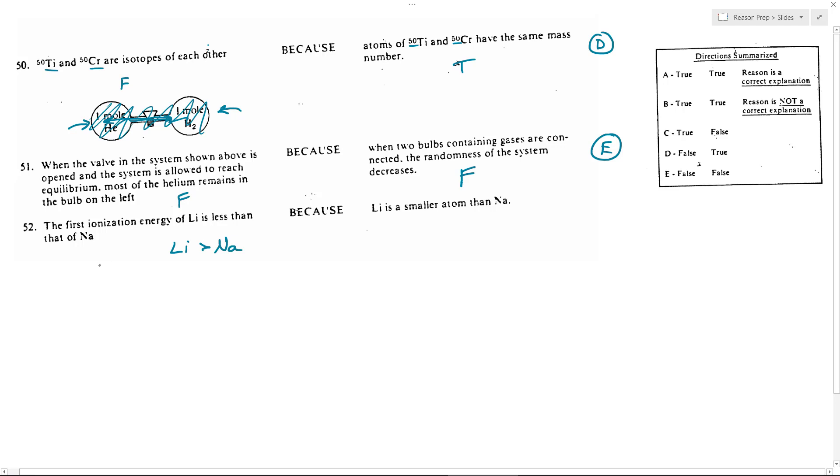So 52 is false. Li is smaller than Na. Now, again, you need to know your trends for radius.